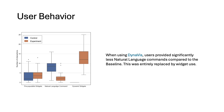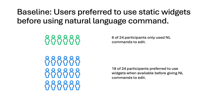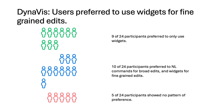When looking at the usage metrics from telemetry, participants using Dynavis provided significantly fewer natural language commands compared to the baseline condition, and this was entirely replaced by widget use. In the baseline condition, 6 out of 24 participants only used natural language commands to edit, whereas the majority of 18 participants preferred to use pre-populated widgets when available before giving natural language commands. In the experiment condition with Dynavis, 9 of the 24 participants preferred to only use widgets instead of natural language commands, and 10 participants preferred to use natural language commands for broad edits and widgets for fine-grained edits. In general, users preferred to use widgets for repeated and iterative fine-grained edits.